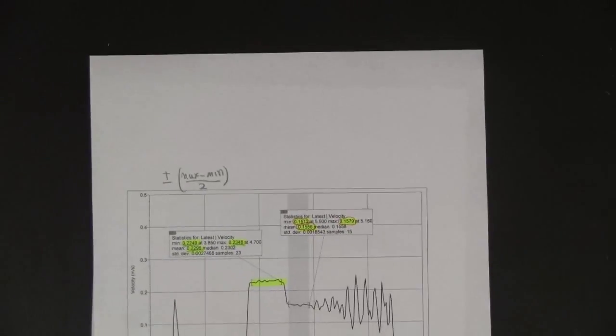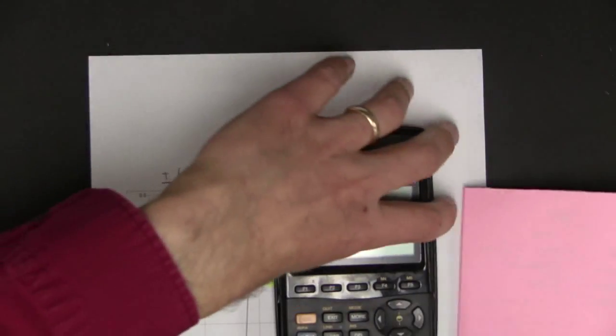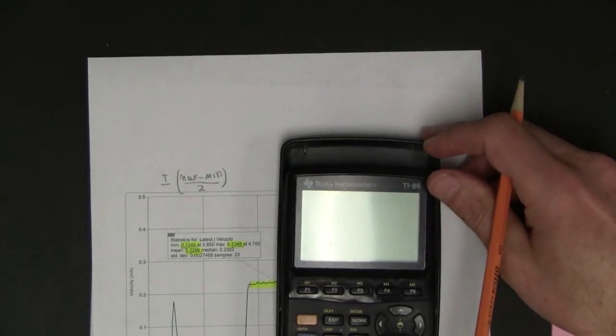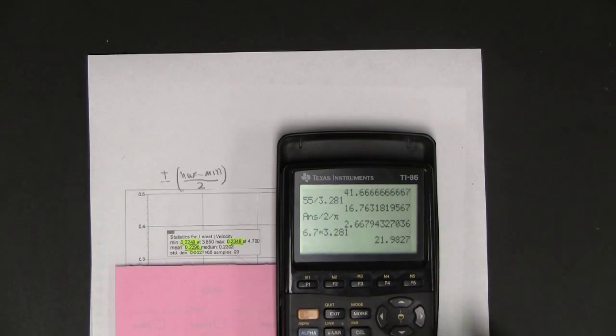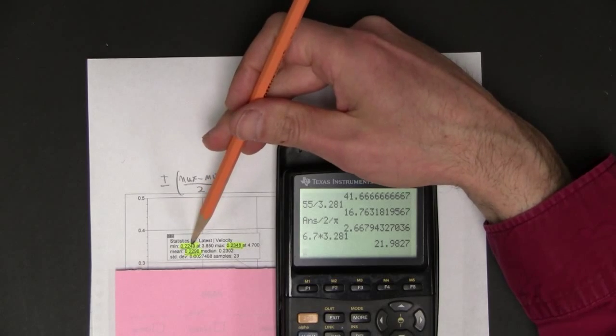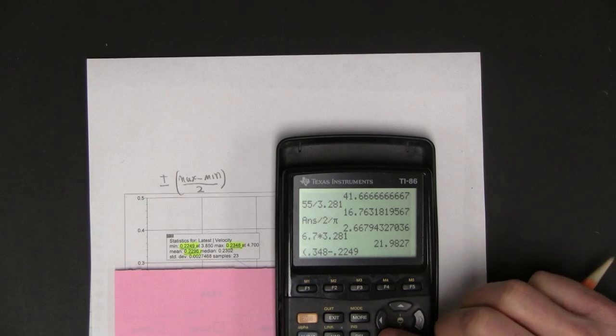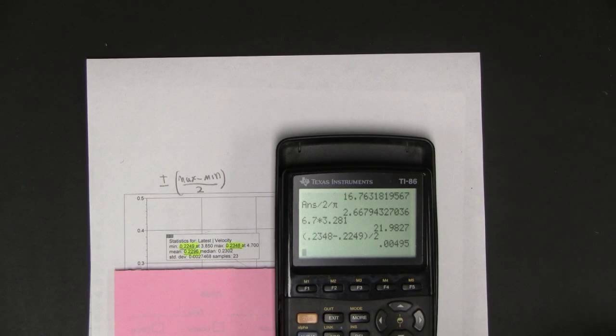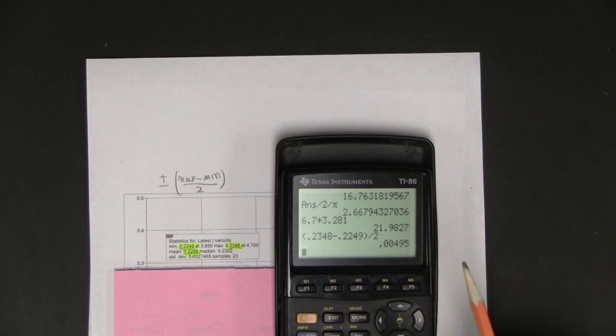So now I'm just going to bust out the calculator. If you look at the before, max minus min over 2. So parenthesis, 0.2348 minus 0.2249. I've already obviously failed this. So 0.2348 minus 0.2249 divided by 2. And that's 0.00495, so I'm going to say just 0.0050, I think, is good enough. So before is plus or minus 0.0050.